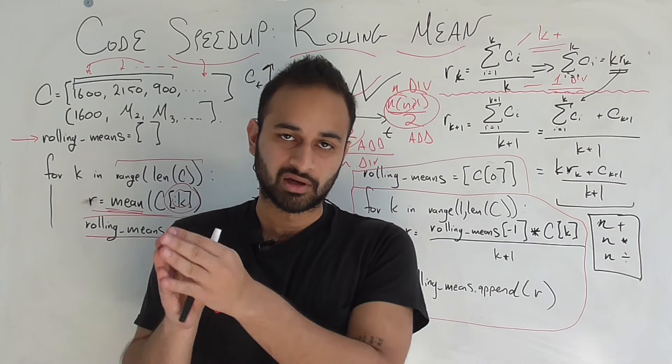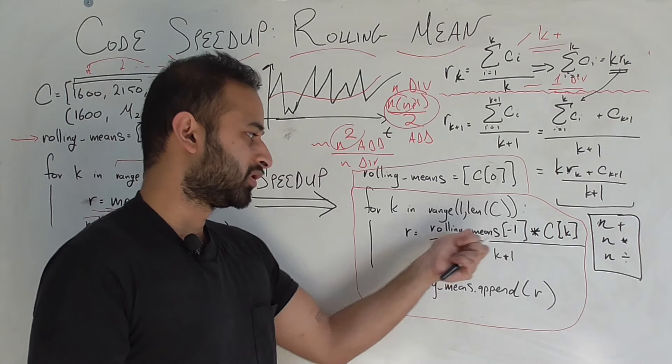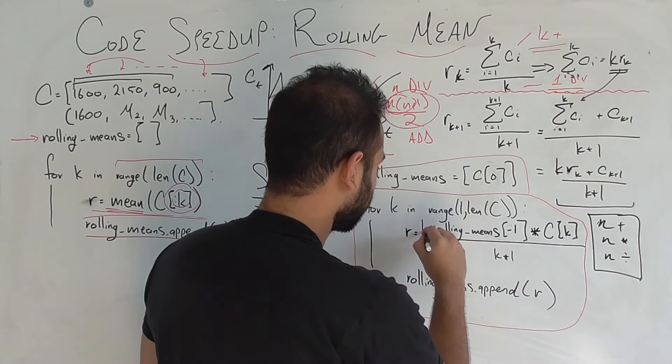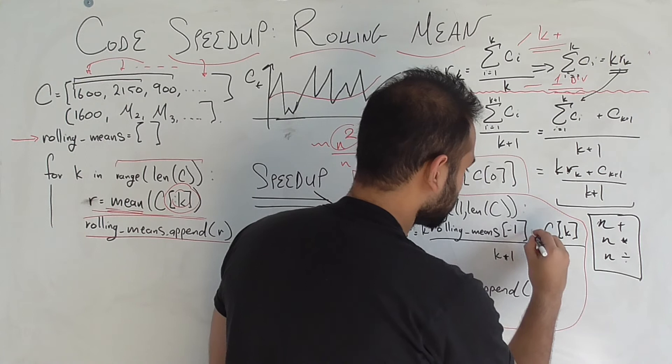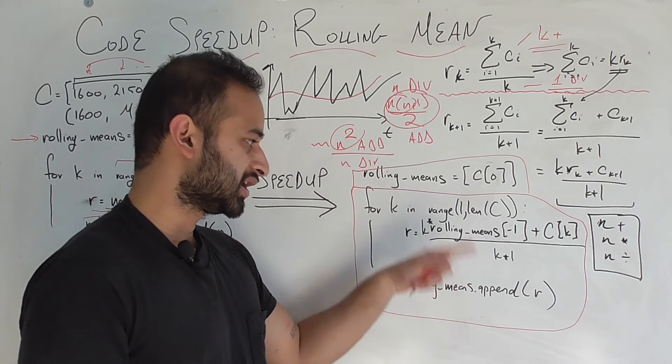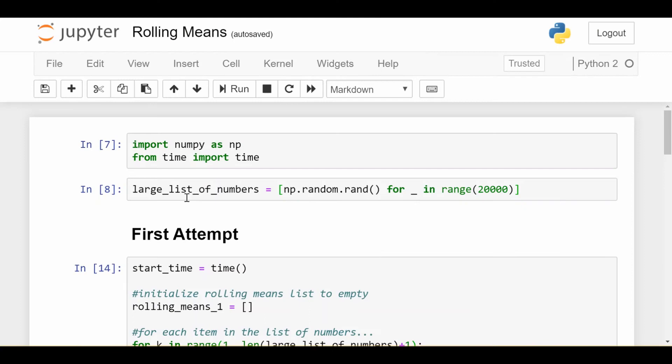Then we go from k in range one to length c because we're going to start with the second rolling mean because we already have the first one ready to go. Each given rolling mean is given by the previous rolling mean. This index negative one means get the last element of that list. So the previous rolling mean times k. So actually I forgot that, so it's a good thing we're going through this. So k times that rolling mean plus c at k, right? That's what that's doing right there. Divide it by k plus one. That's going to give me the new rolling mean. And I simply just throw that rolling mean into my list and go about it that way. That's going to be a lot faster. But don't take my word for it. Let's go to the code.